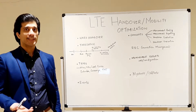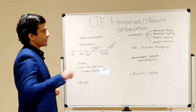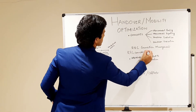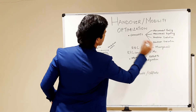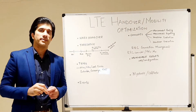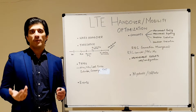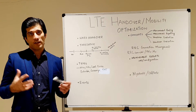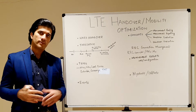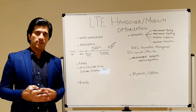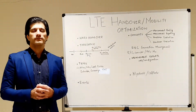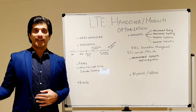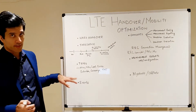Regarding RRC connection management, in LTE we have two states: RRC connected and RRC idle. In RRC connected state, we have a signaling radio bearer (SRB) attached to the network, and handovers are the mobility mechanism in this state. In RRC idle state, cell selection and reselection are the mechanisms for mobility, so the mobile can be camped on one cell and then reselect another cell.